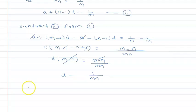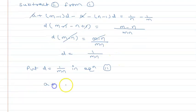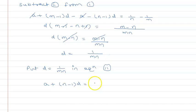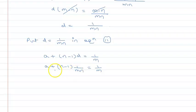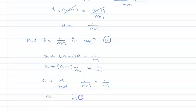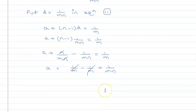Now I put d = 1/mn into Equation 2: a + (n-1) × (1/mn) = 1/m. Expanding: a + n/mn minus 1/mn = 1/m. Since n/mn = 1/m, this gives a + 1/m minus 1/mn = 1/m. The 1/m terms cancel, so a = 1/mn. So both a and d equal 1/mn.